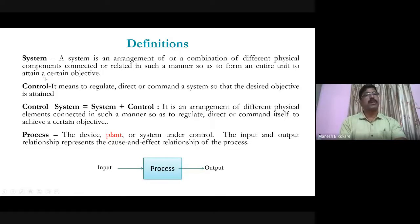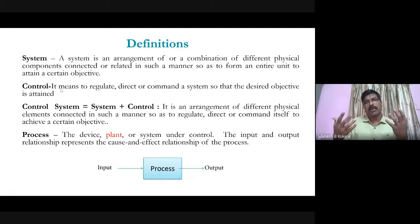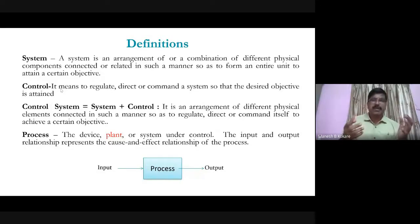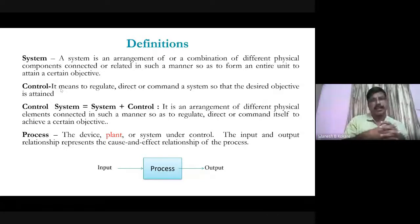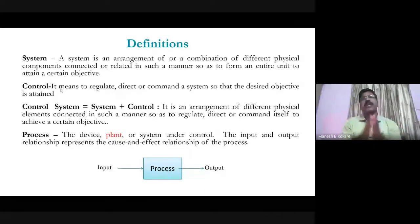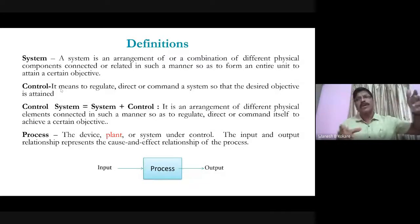Control means to regulate, direct, or command a system so that the desired objective is attained. For example, a voltage regulator designed for 10 V should maintain exactly 10 V output even if the input varies from 25 V to 50 V, regardless of changes in load current or temperature.